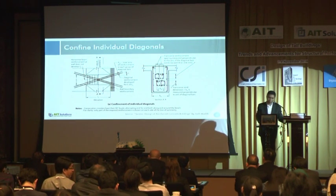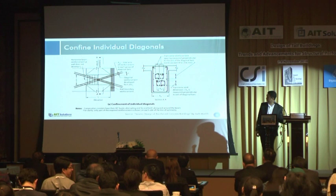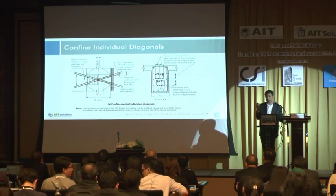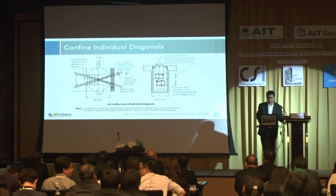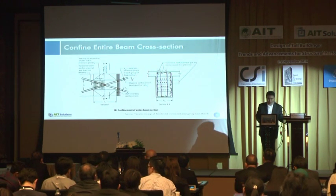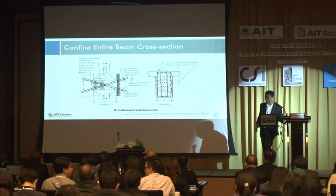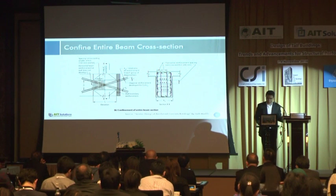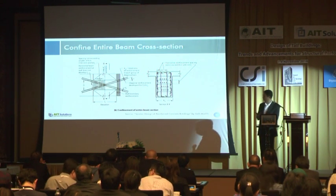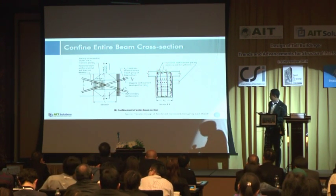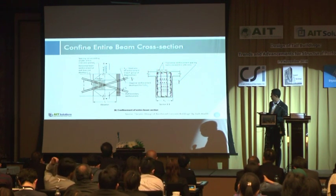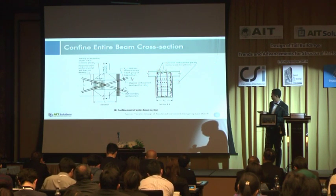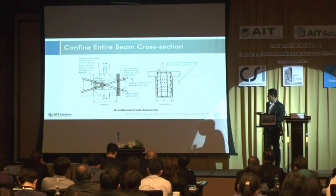This is the typical detail of the diagonal reinforced coupling beam. There are two types: one where confinement is provided at the diagonal bars, and another where confinement is provided for the entire beam section with no confinement in the diagonals. We also have to take care that the longitudinal reinforcement in the beam should not be developed inside the wall — we do not want to develop moment in the coupling beam.